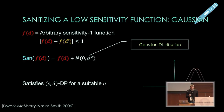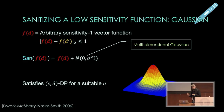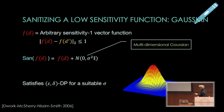Here's another really nice property of the Gaussian mechanism. If the function you care about is not a scalar but a vector function — a bunch of real values — and the effect of any one individual on the output has Euclidean norm at most one, then just adding Gaussian noise from the appropriate high-dimensional distribution gives differential privacy. In two dimensions, you sample from some such distribution; on an adjacent database you sample from a nearby distribution. These are still very close.